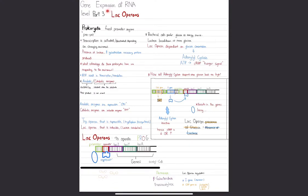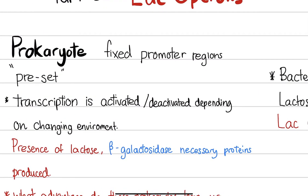Gene expression refers to the mechanism behind how our cells — or really any organism — decide to transcribe and hence translate certain genes. When we talk about prokaryotes, they are different from eukaryotes. A unicellular bacterium inside an environment has to actively adapt to its changing environment, but it has fixed promoter regions — some stronger than others — so it must control its gene expression.